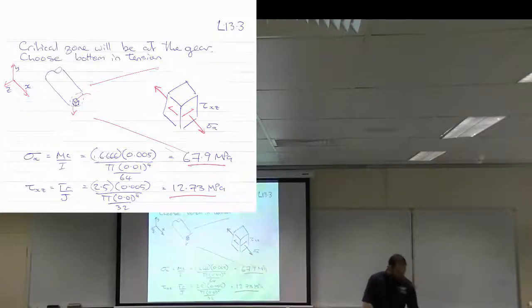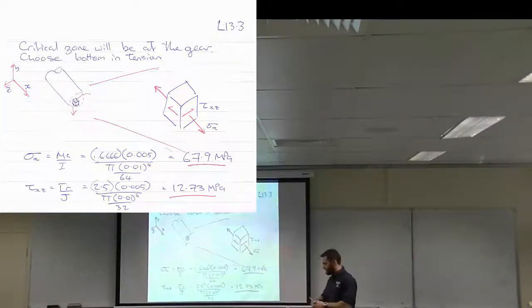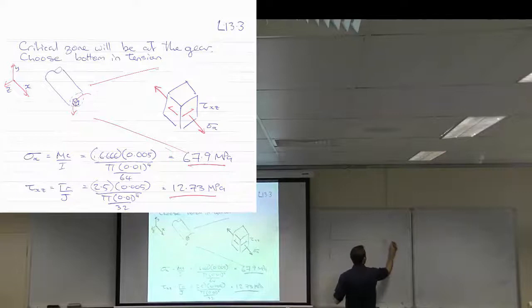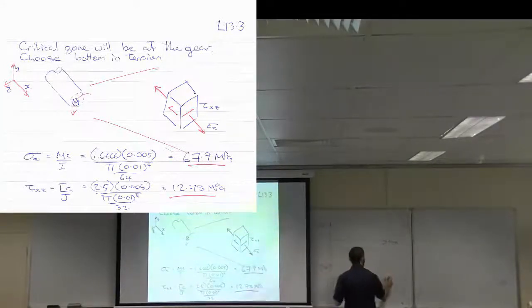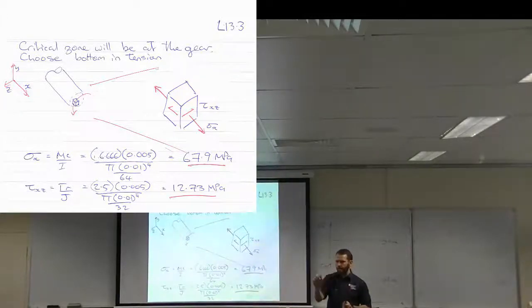Now, let's think about what those values actually do. So if I was to draw sigma x over time and tau xz over time, as that shaft rotates for a single bit of material, a bit of material that goes around the outside as it rotates. What's my stress profile look like?